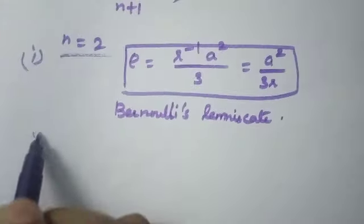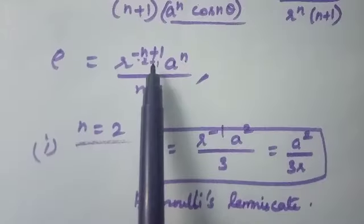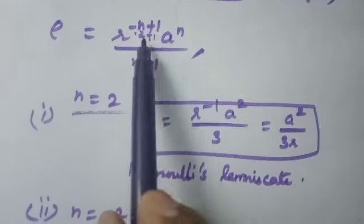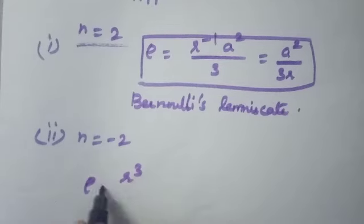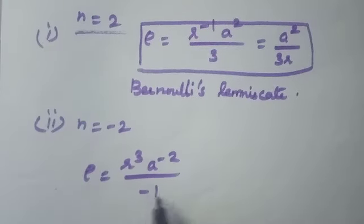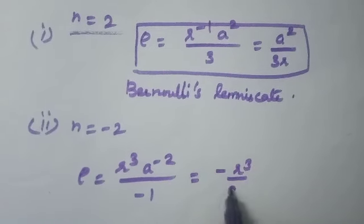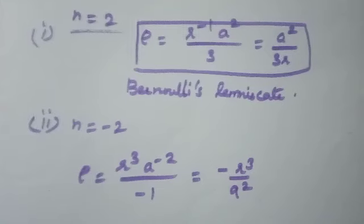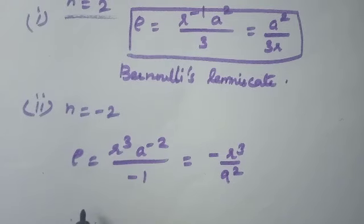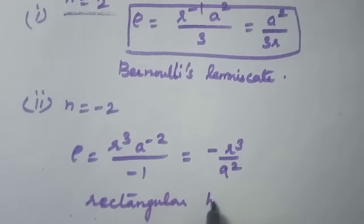The second particular case: if n = −2, then ρ = r^(2+1) · a^(−2) / (−2+1) = r³ · a^(−2) / (−1) = −r³/a². This represents a rectangular hyperbola.